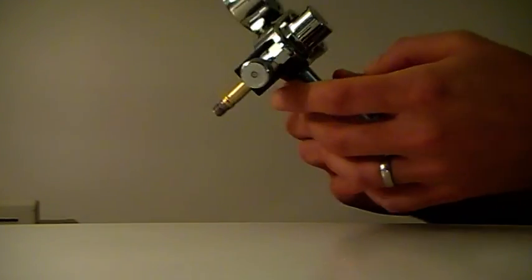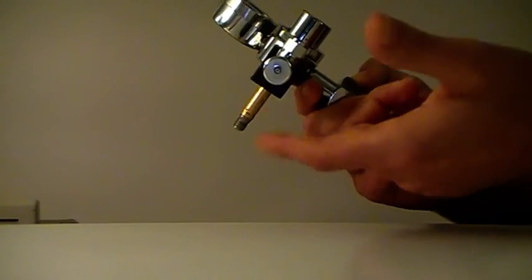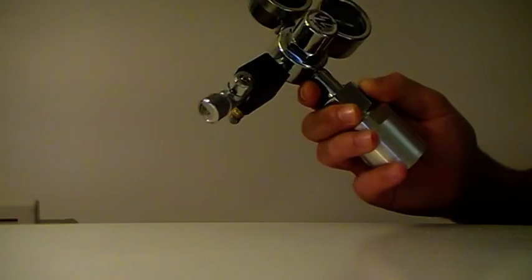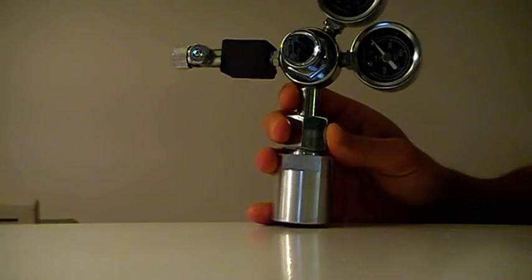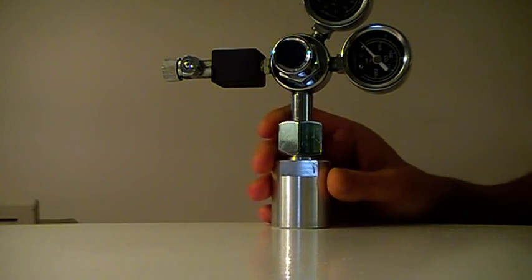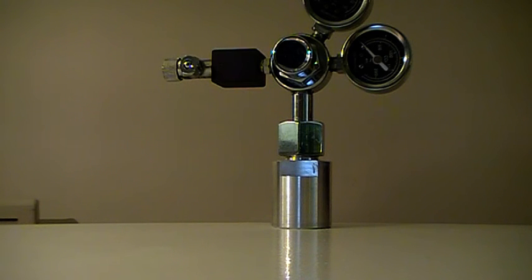Once connected, the solenoid on the regulator—detached here from the mains connection for the purpose of the video—would be used to control the release times of CO2 into your aquarium. And that's really all there is to it.